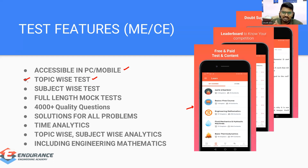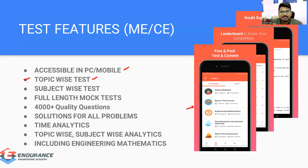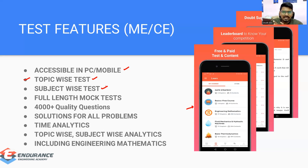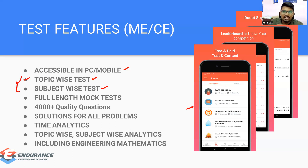For civil, the subjects covered include fluid mechanics, strength of materials, environmental engineering, irrigation engineering, soil mechanics, geotechnical and foundation engineering, structural subjects, and non-structural subjects like building materials. Each subject has separate topic-wise tests and subject-wise tests.